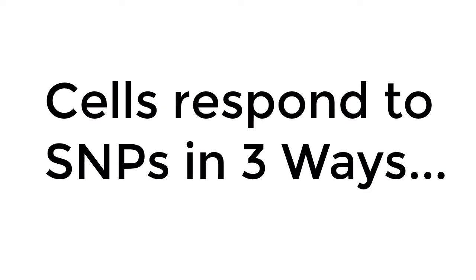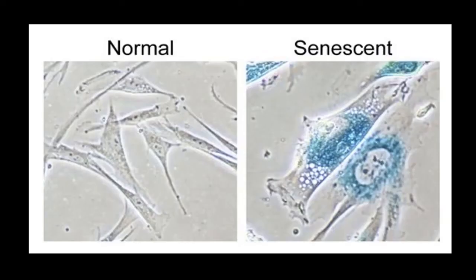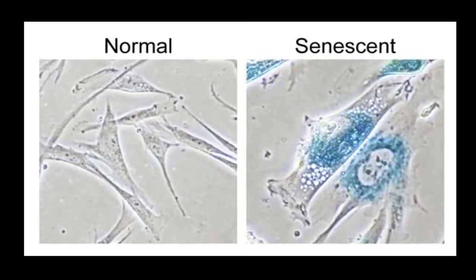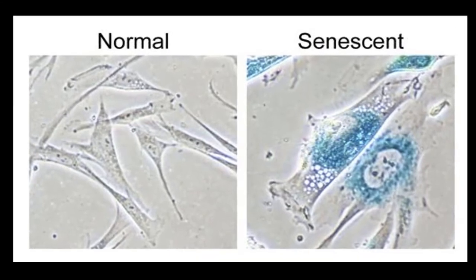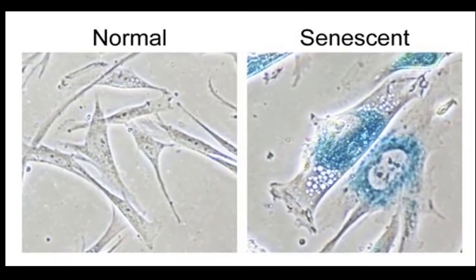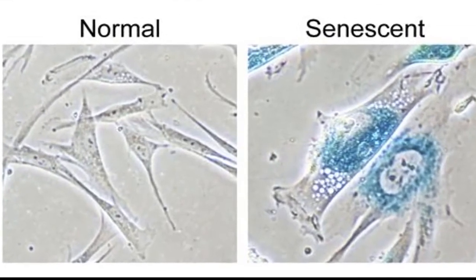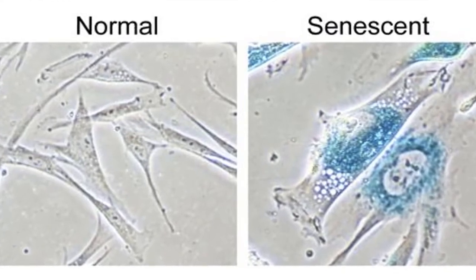Cells respond to the damage from SNPs in three ways. The first is senescence, a cellular state characterized by dormancy and refusal to participate in desirable programmed cellular death. This results in the presence of millions of damaged cells that refuse to die and make way for fresh new cells.